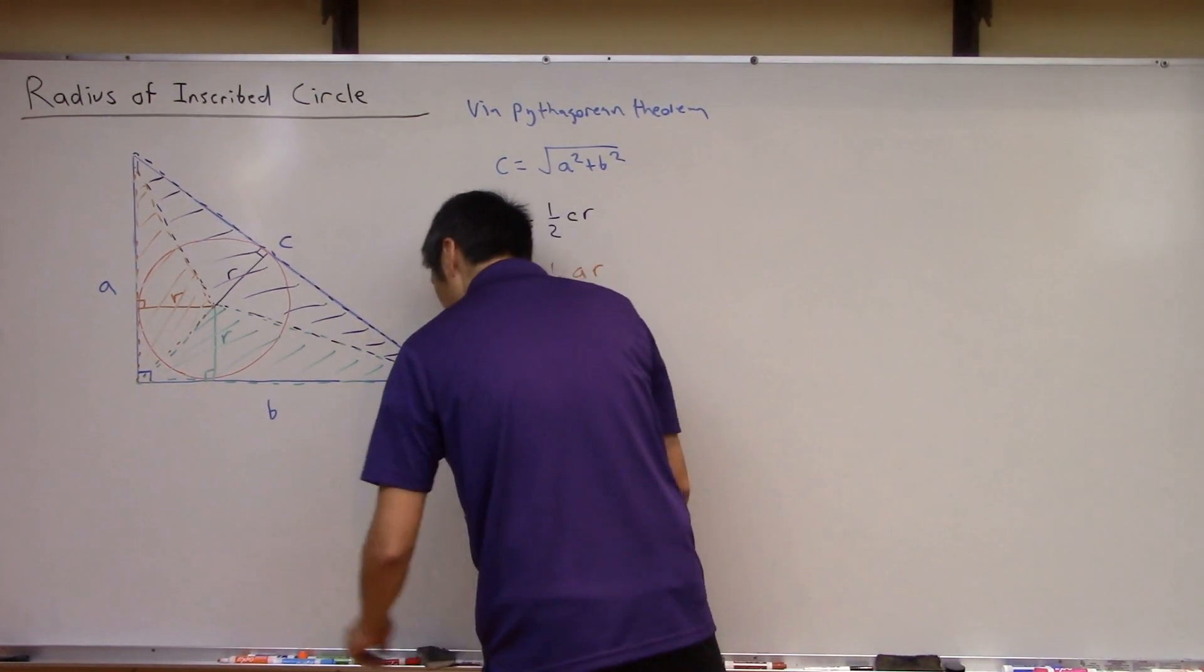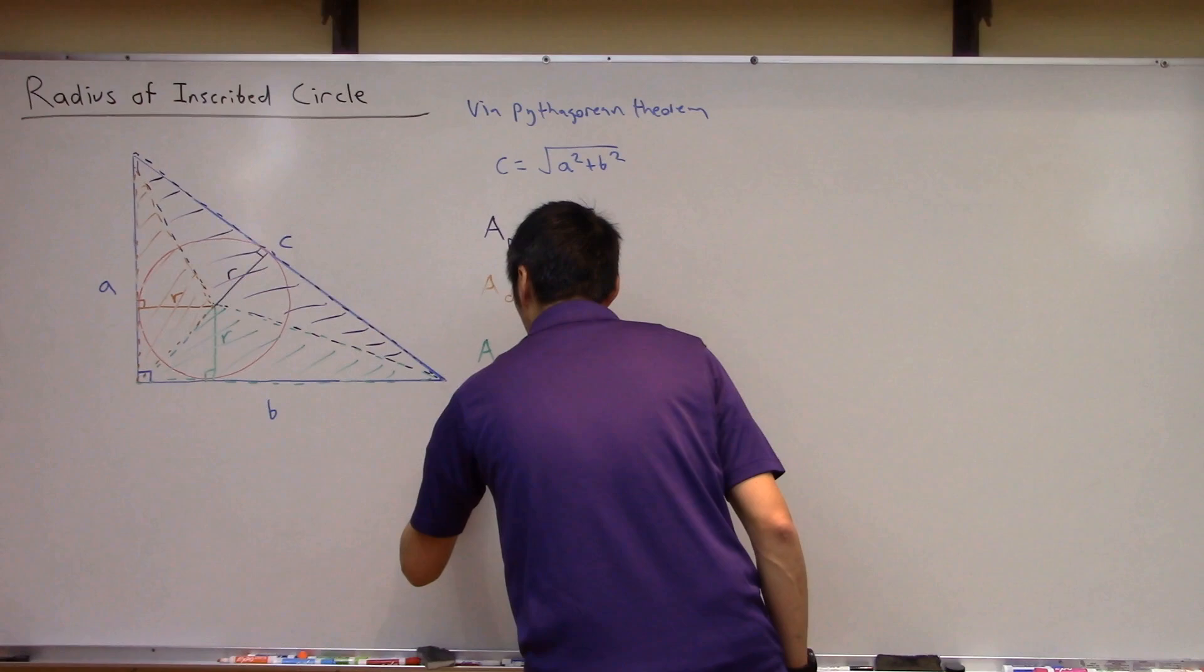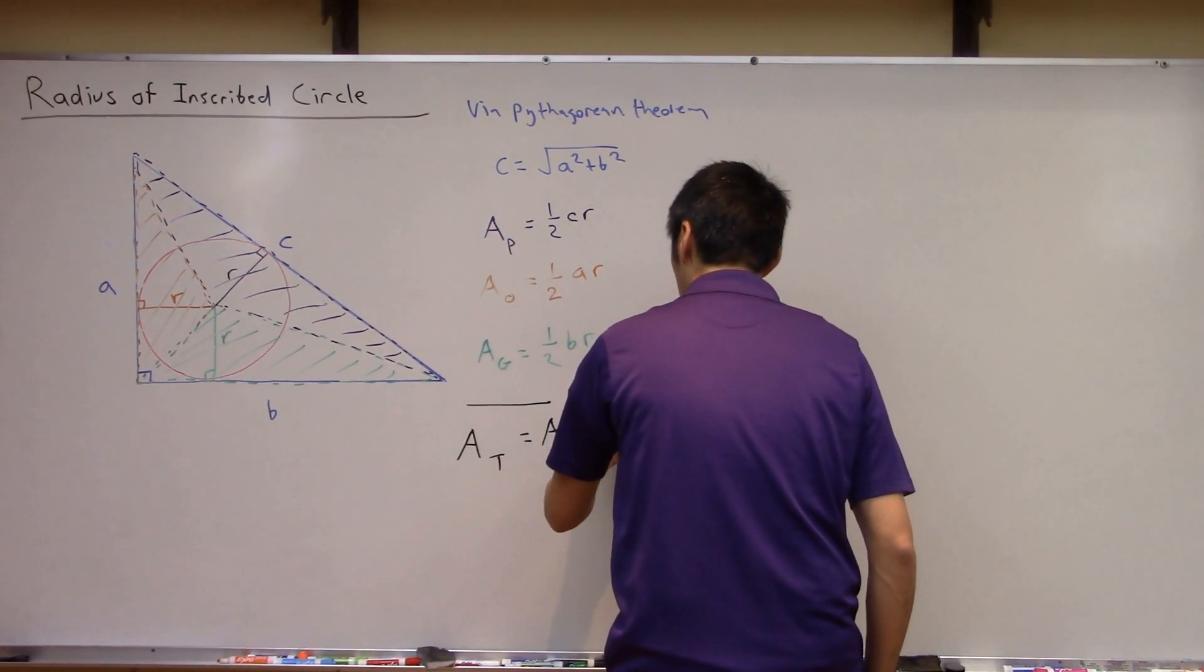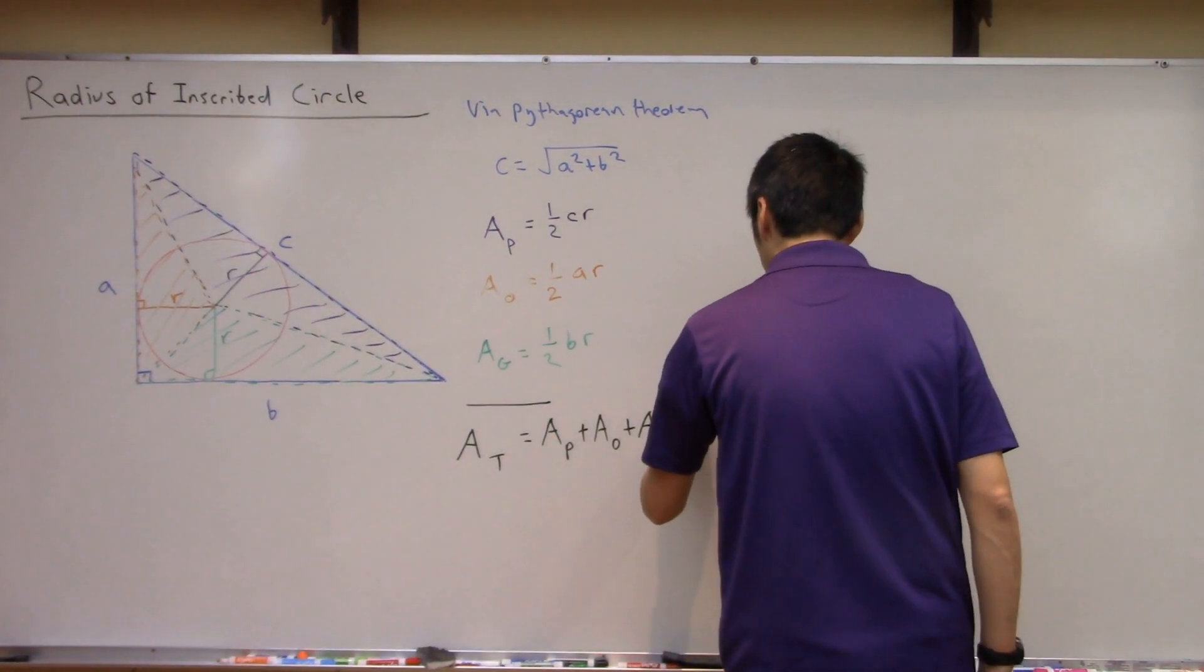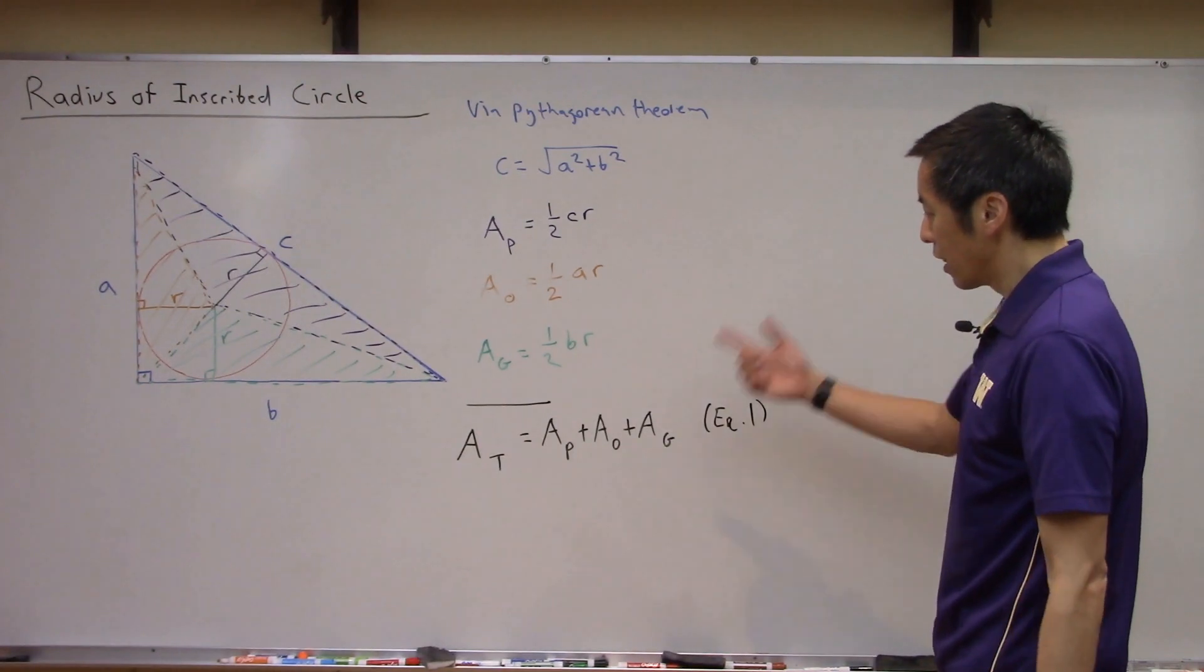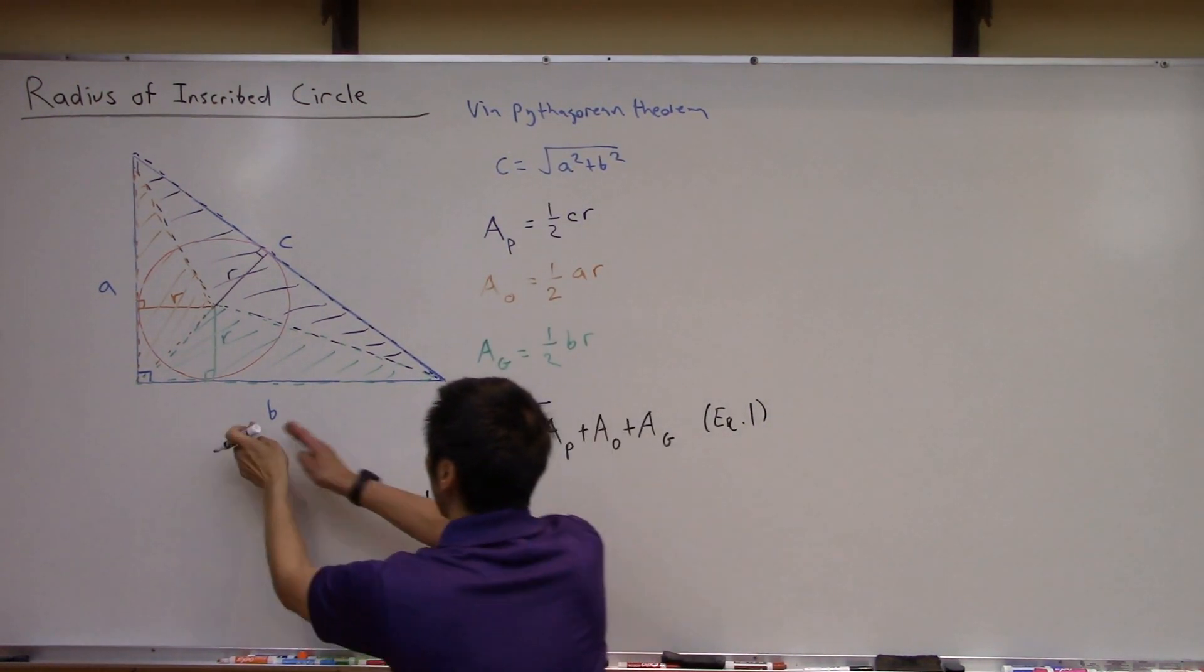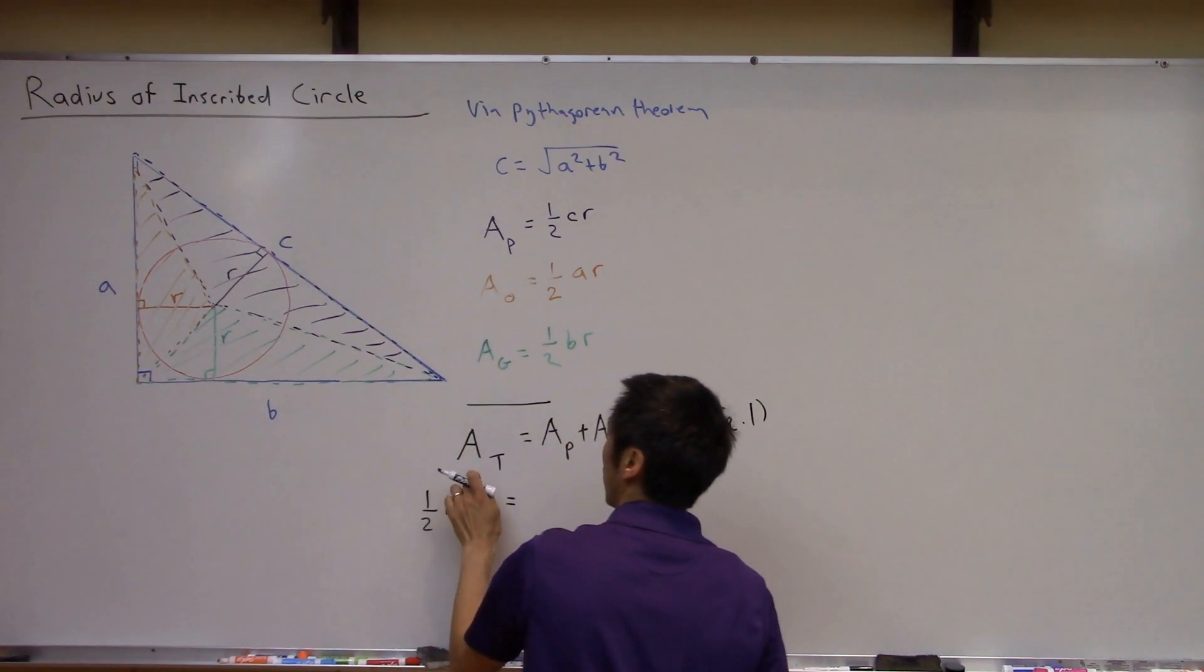So now what we can say is let's go ahead and put all of these together. And we are going to combine and say that the area of the total triangle is just what? It's the area of the purple plus the area of the orange plus the area of the green triangles all put together. Let's actually save this as equation one because later on I think we're going to want to take a closer look at this. Let's go ahead and substitute what we know. So the area of the total original blue triangle, same thing, can't we just say that's also one-half times its base, which is this, b, times its height, which is a.